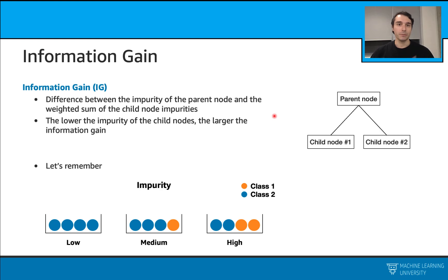This is the difference between the impurity of the parent node and the weighted sum of the impurities of the child nodes. So we can calculate the impurity in the parent node, then we get the weighted sum of the impurities of the child nodes, and the difference is the information gain. And the lower the impurity of the child nodes, the larger the information gain will be.